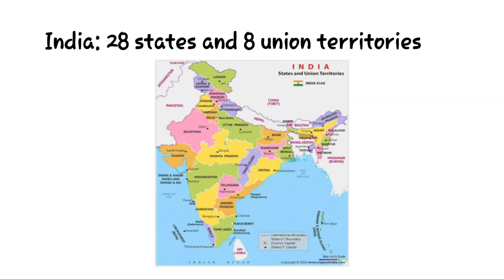In this map of India, you will be able to identify the 28 states and 8 union territories. In the examination, any one state or any one union territory will be asked for marking on the map. Study very thoroughly. The three oceans are also marked there, and neighbouring countries are also marked properly. Go through all these things very clearly.